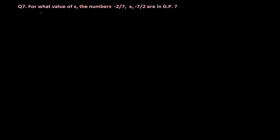Welcome friends, once again here is another problem. For what value of x, the numbers minus 2 by 7 comma, x comma, minus 7 by 2 are in GP? So the question is actually saying this will be in GP.